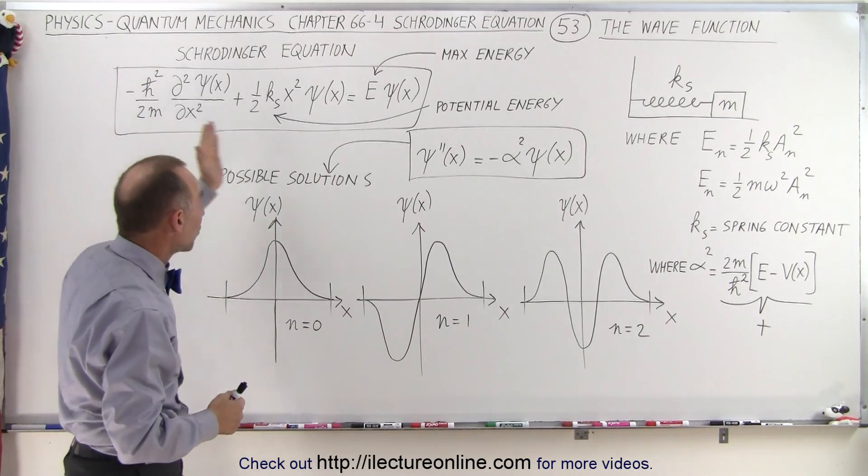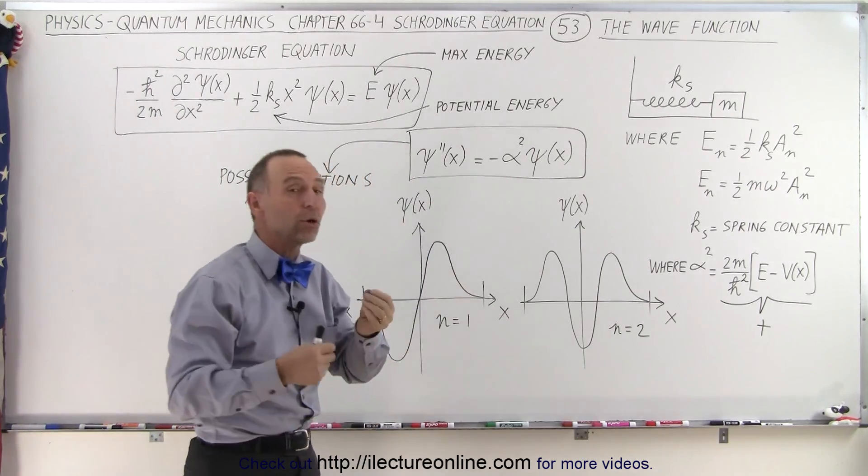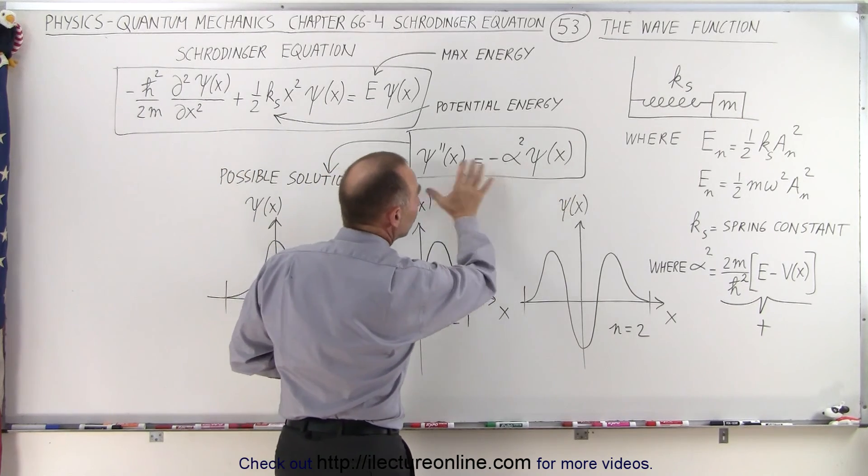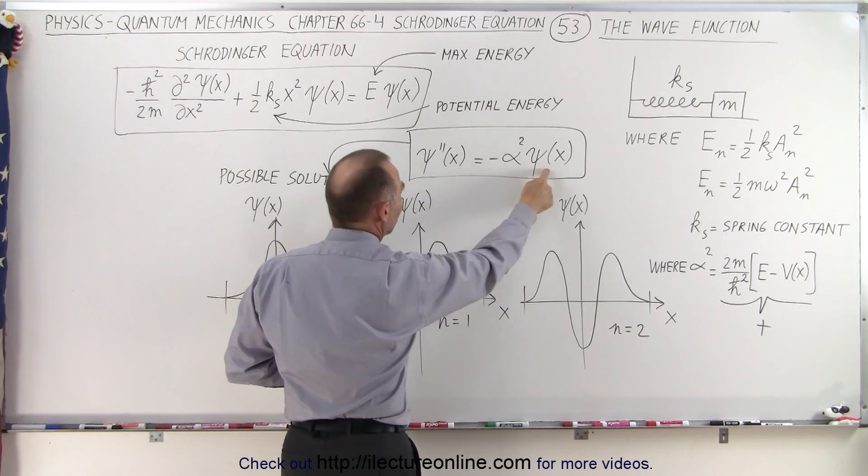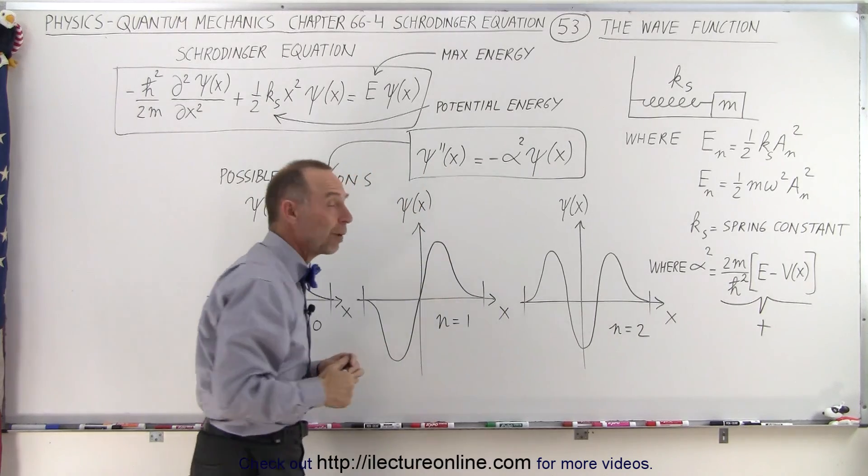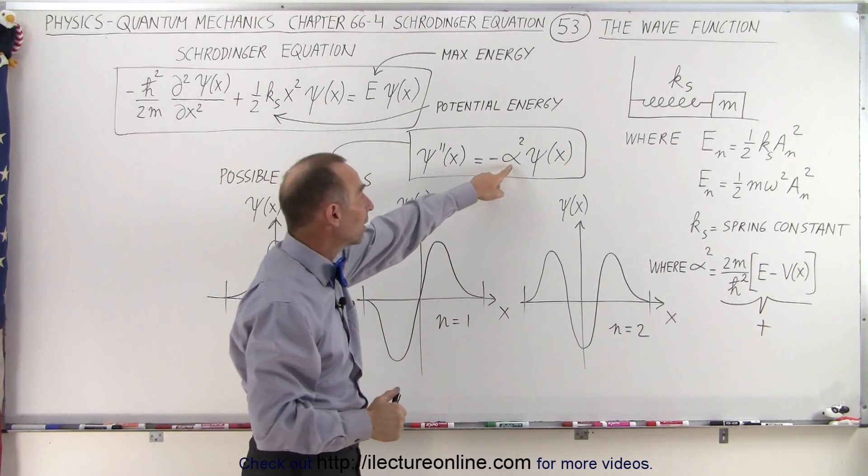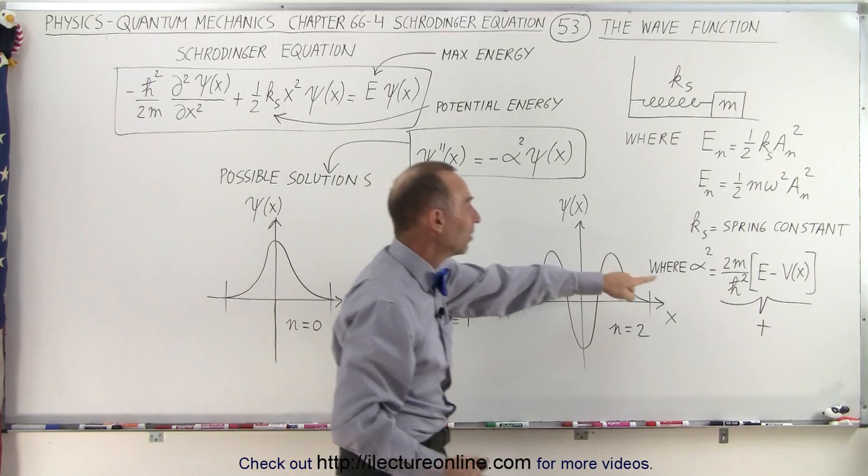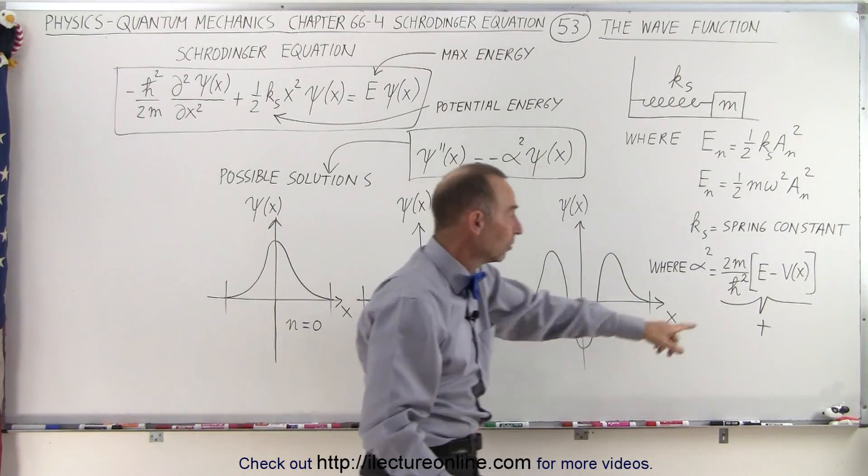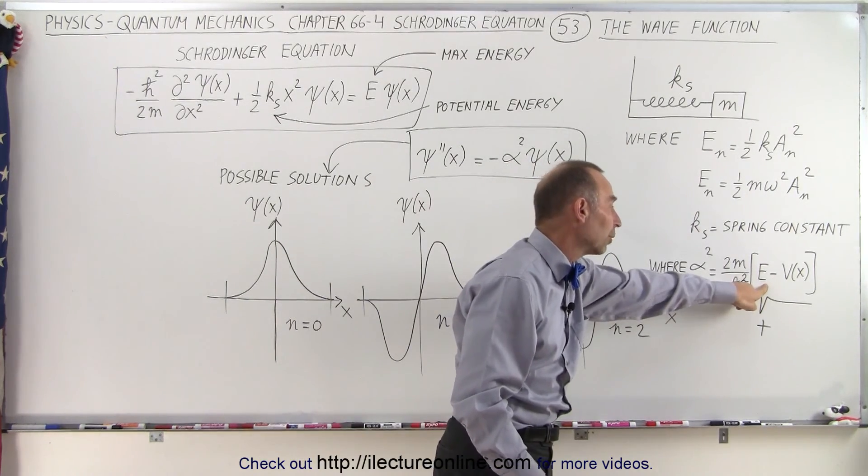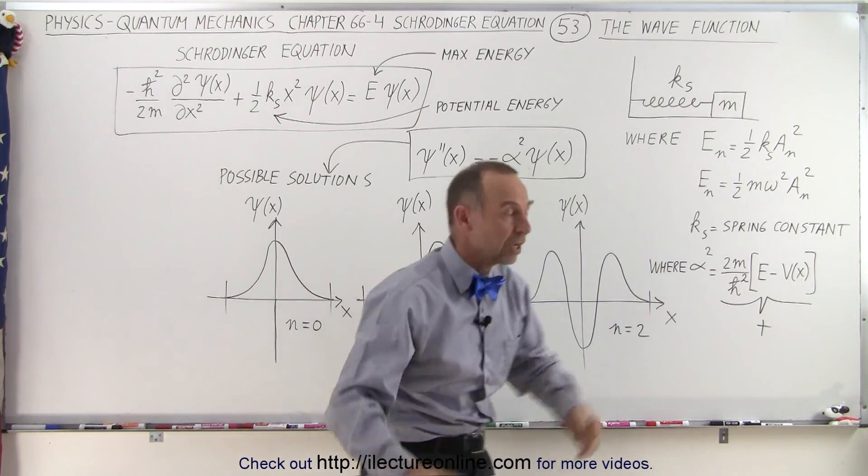However, when we write the equation like this, it makes it a whole lot easier because then you realize there is a sine and cosine relationship between the wave function and the second derivative of the wave function as long as this quantity right here, alpha squared, is indeed a positive quantity, which we know it is, since the total energy is always greater than or equal to the potential energy of the oscillator.